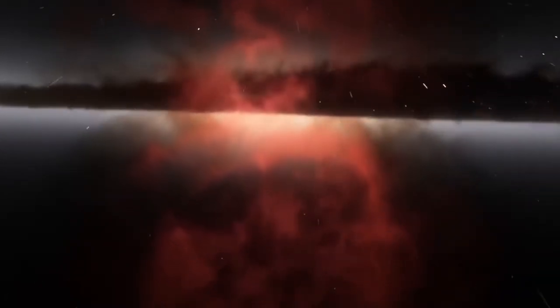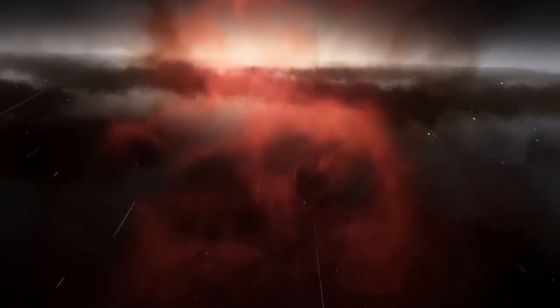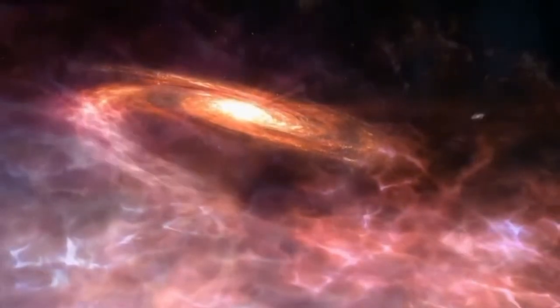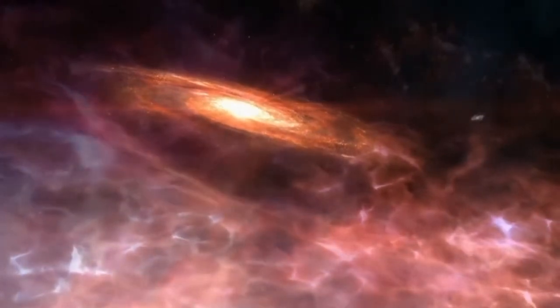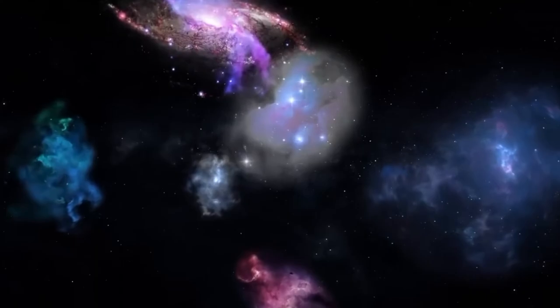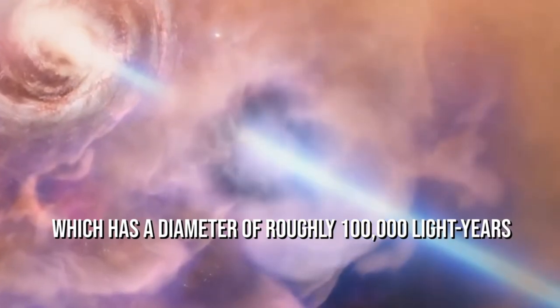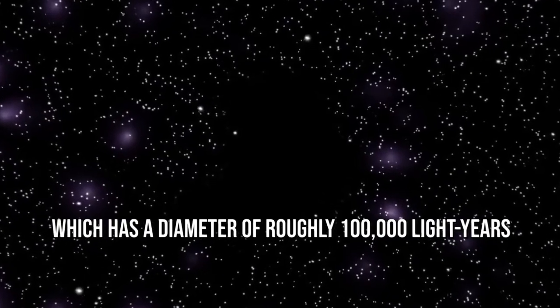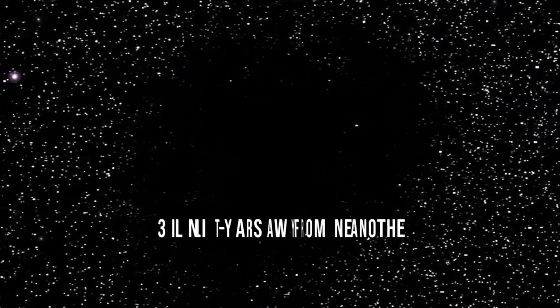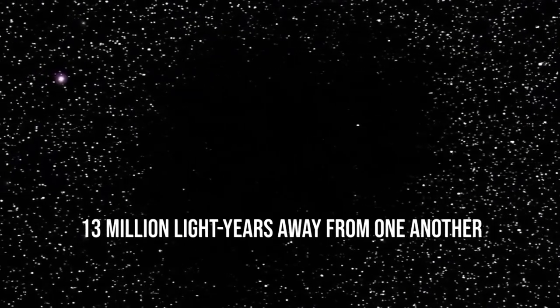The two galaxy clusters that compose Apple 3667 are thought to have initially clashed around 1 billion years ago, which is when the shockwave first burst into existence. The wave created the twin arcs of radio waves that are still visible today as it hurled electrons into space at close to light speed. These radio arcs are 60 times larger than the Milky Way galaxy, which has a diameter of roughly 100,000 light years and travels at speeds of more than 3.3 million miles per second. They are also about 13 million light years away from one another.